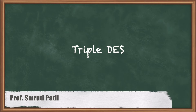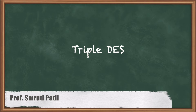Hello friends, welcome to the next lecture on DES. In this lecture we will be seeing the concept of Triple DES. In the previous lecture we saw what is Data Encryption Standard — DES — which is a block cipher algorithm that follows the Feistel structure for its encryption process.